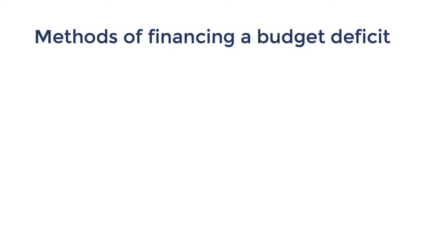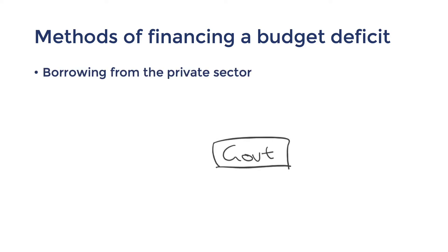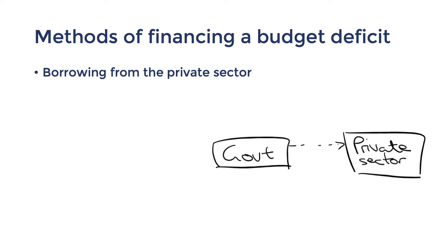The most common way of funding a budget deficit is by borrowing from the private sector. The government does this by selling new securities in domestic financial markets. These securities promise later repayments with interest to the lender, so in effect the government is borrowing money from private sector lenders.